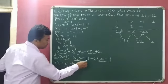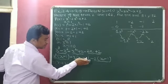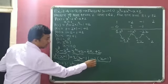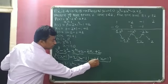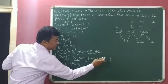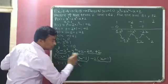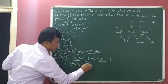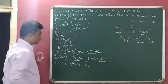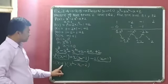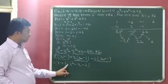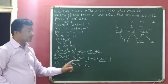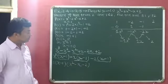Now from the second term, x minus 1 will go outside, then what we have? Minus x. Now from the third term, x minus 1 will take outside, then only minus 2 is left. Now see children: x minus 1 in the bracket, x square minus x minus 2.